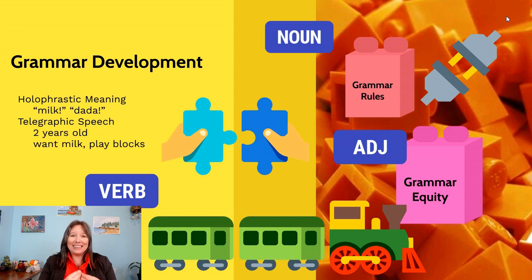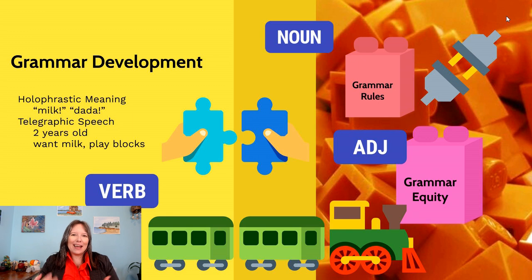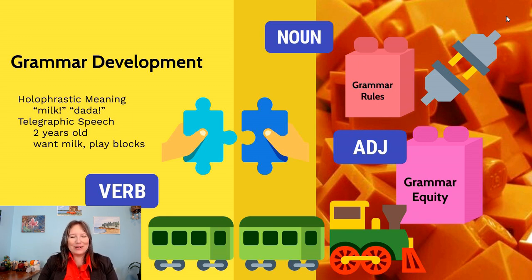For instance, the sentence 'Margot ate donuts for dessert' is very different than 'The donuts ate Margot for dessert.' Just by flipping two words around, the meaning changes. Where you put pauses and commas can also change the grammar, and grammar development is something we start off with innately early in our lifespan.